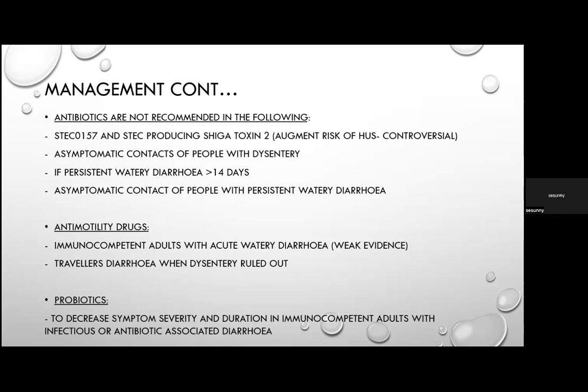Patients with persistent watery diarrhoea do not need antibiotics, as beyond the 14-day mark causes are usually parasitic or protozoal depending on patient profile. Asymptomatic contacts of persistent watery diarrhoea also don't need prophylactic antibiotics. Antimotility drugs like loperamide have weak evidence for use in immunocompetent adults with acute watery diarrhoea, and in traveller's diarrhoea when dysentery has been excluded — shown to reduce frequency and volume of stool. Probiotics are recommended to decrease symptom severity and duration in immunocompetent adults with infectious or antibiotic-associated diarrhoea.